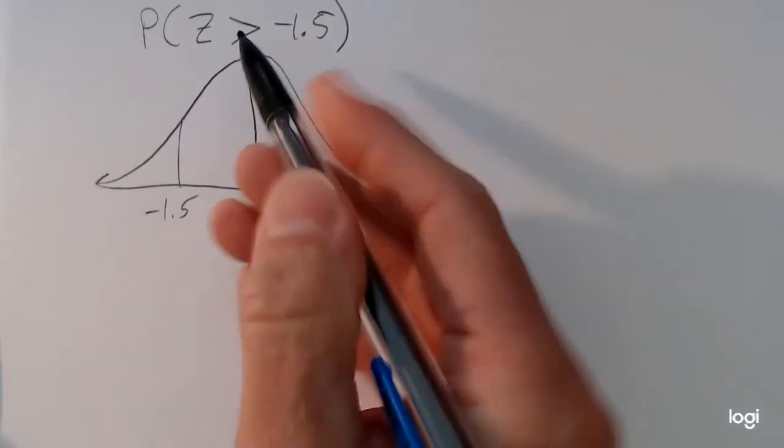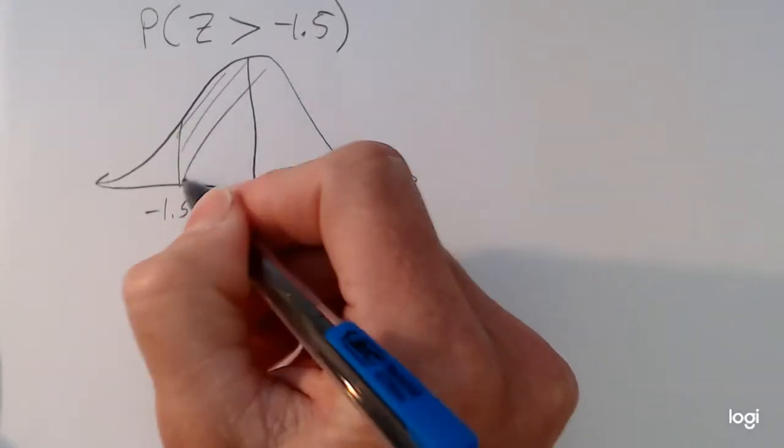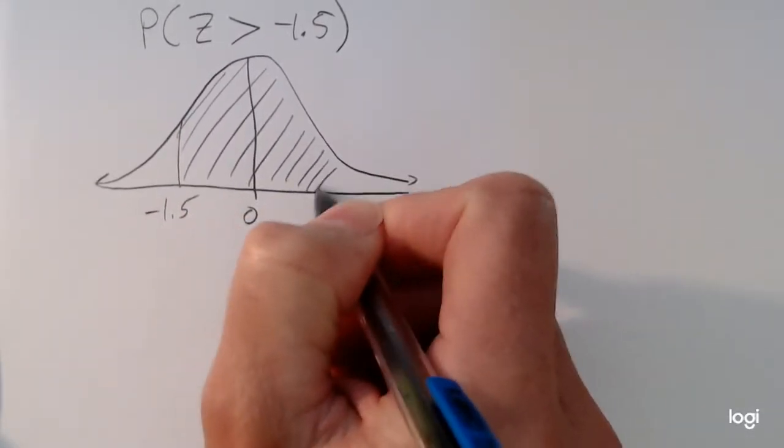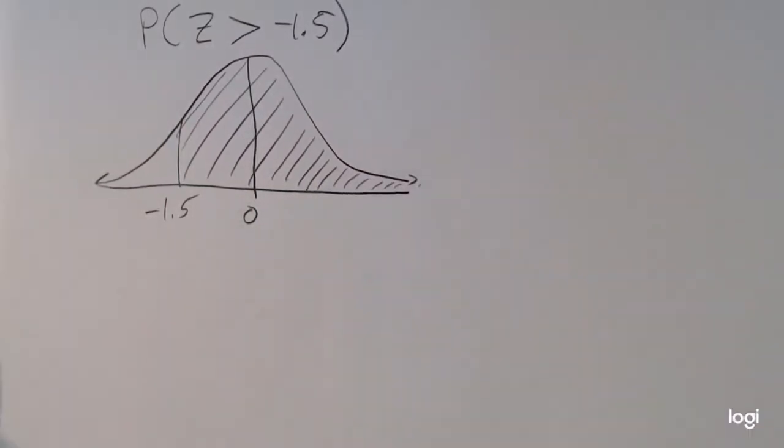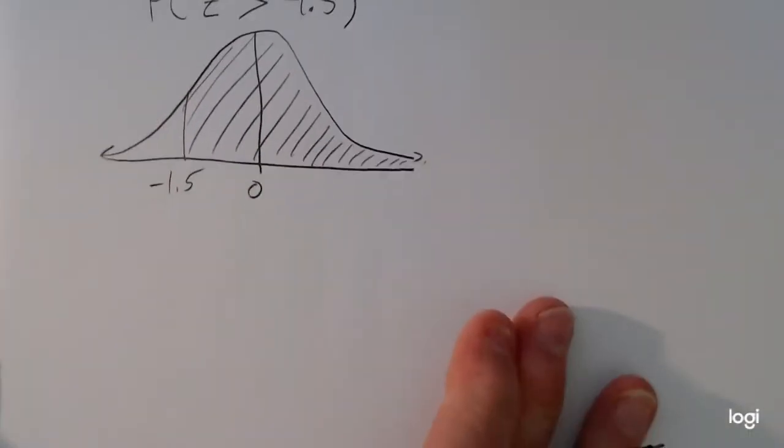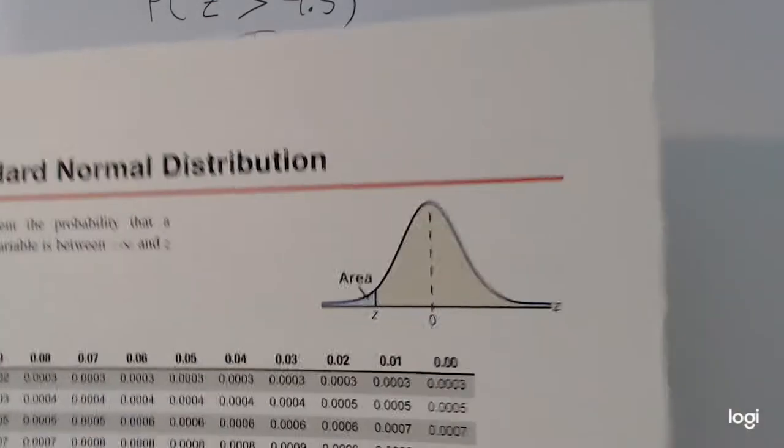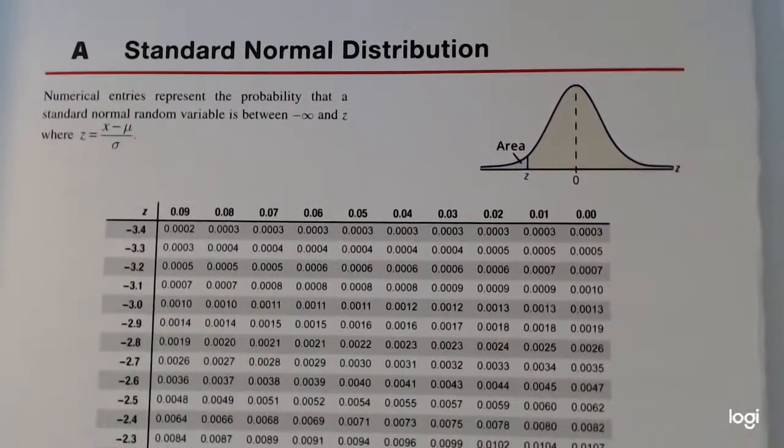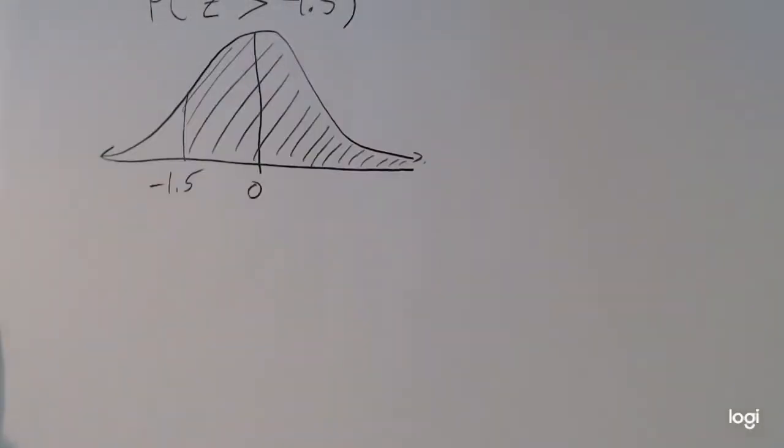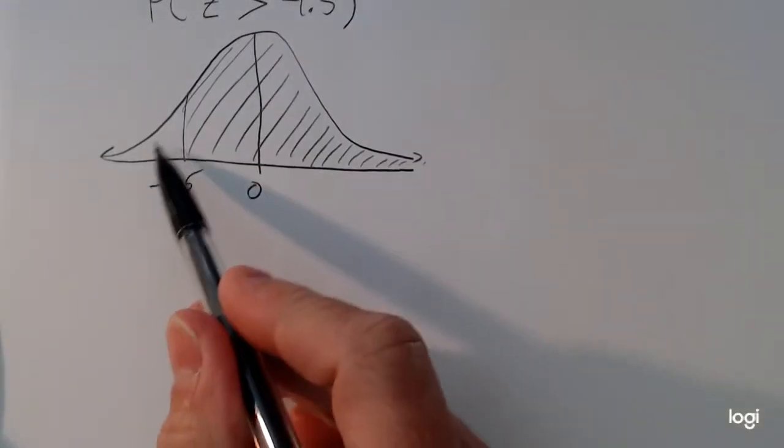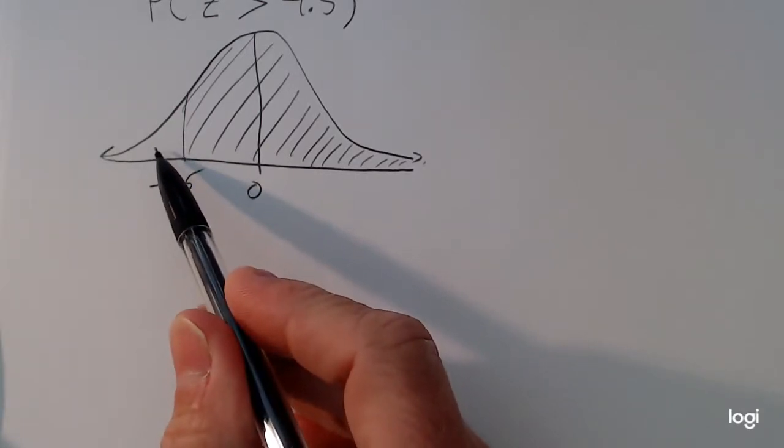And because it's greater than, I want to shade to the right. Now, using the standard normal table, the table that reads from negative infinity up to z, what it's going to give me is this little tail here, but that's not what I want.